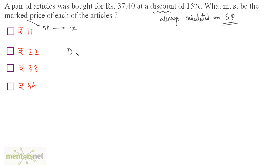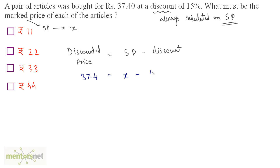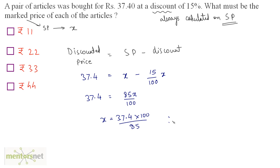Let the selling price (marked price) be Rs. X. The discounted price equals selling price minus discount: 37.4 = X − (15/100)X = 85X / 100. So X = 37.4 × 100 / 85 = 44. Solving gives X = Rs. 44.